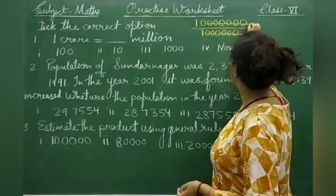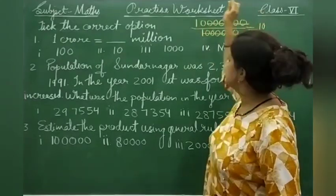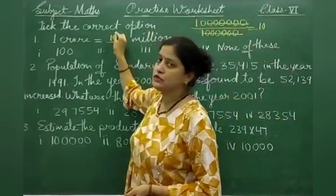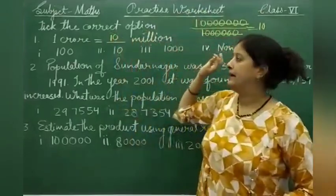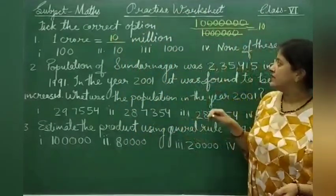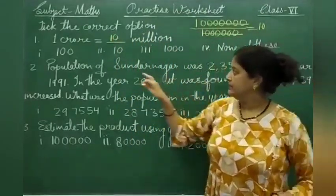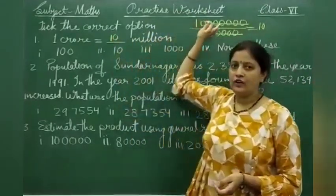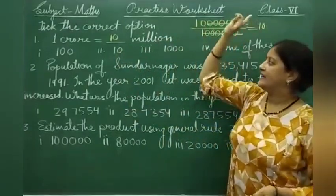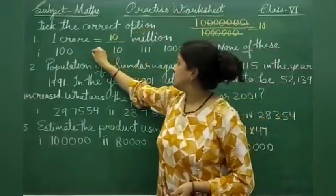You can cancel the zeros — 6 cancel out and 10 is left. So, 1 crore is equal to 10 million. You can solve it on rough paper and then select the correct option.